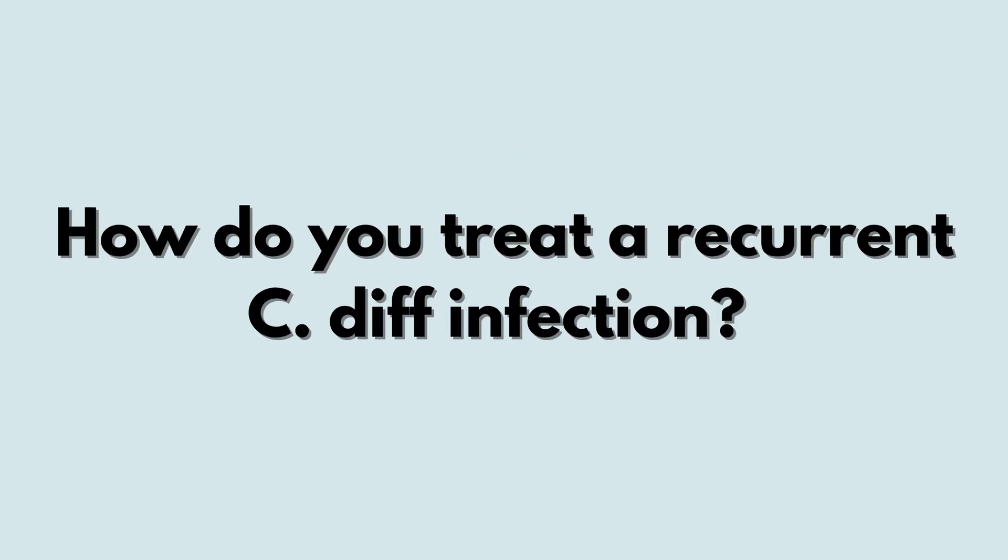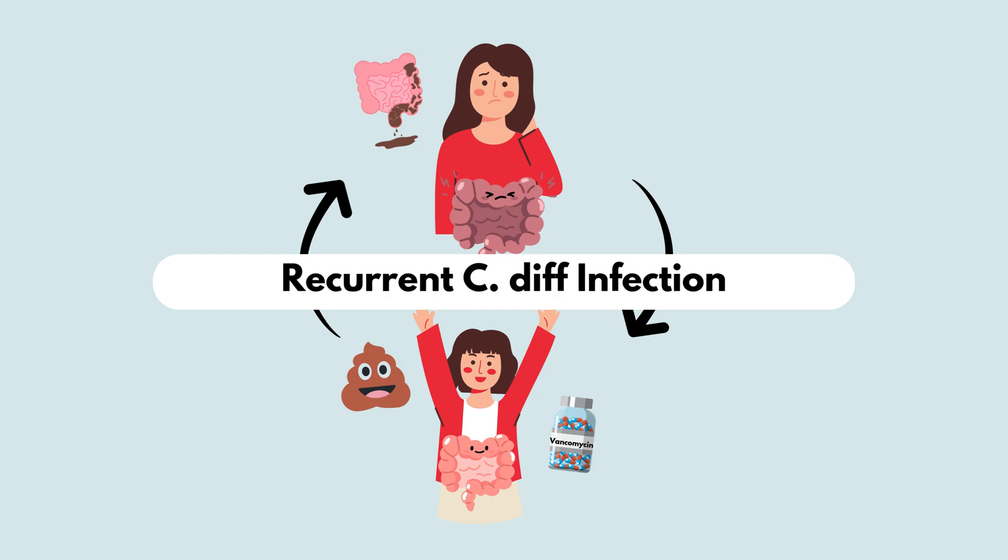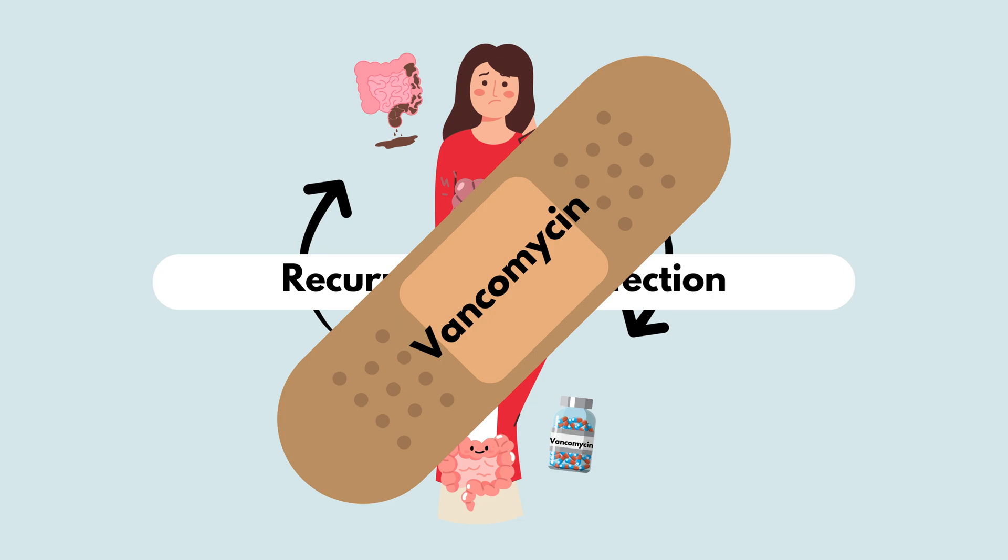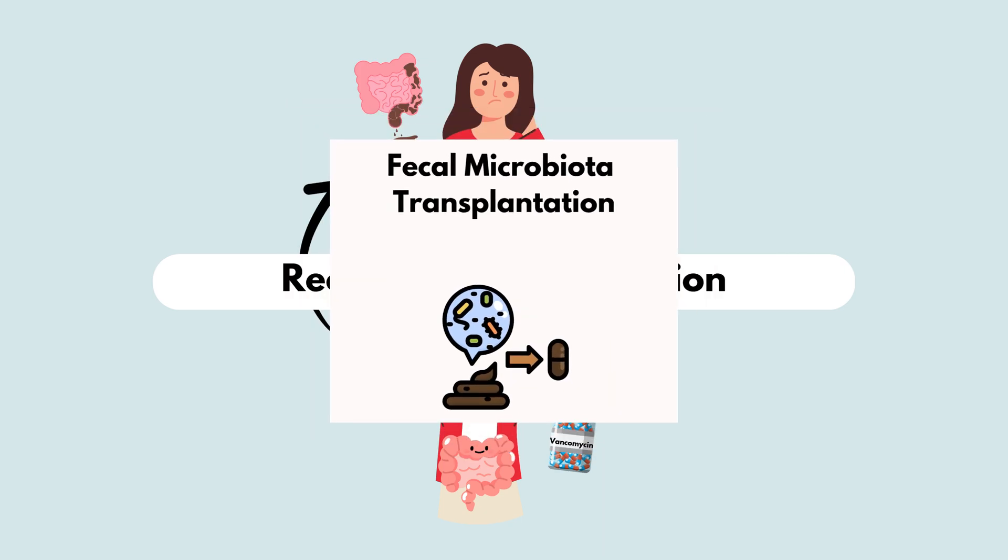How do you treat a recurrent C. diff infection? If you have a recurrent C. diff infection, vancomycin can be like a bandage. It may stop some symptoms, but it is not treating the actual problem. To get past the band-aid effect of vancomycin, we use Fecal Microbiota Transplantation, or FMT.